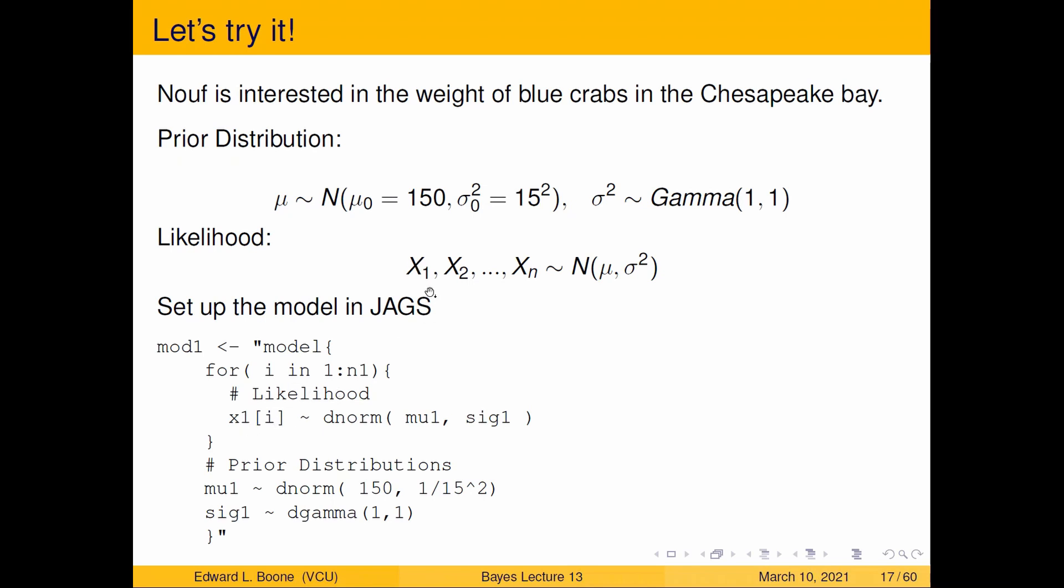x1[i] comes from dnorm, which is the normal piece here. mu1 is its mean. sig1 is its variance, but it's not actually its variance, it's actually precision. But we'll talk about that later. So JAGS uses precision versus using variance, and precision is one over the variance. Okay, so we're going to have to have a prior distribution. So mu follows dnorm(150, 1/15²) in order to get that to work out. And then here I've got sig1 equals dgamma(1,1).